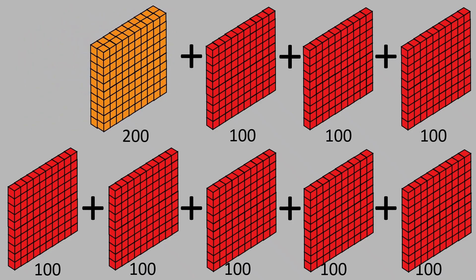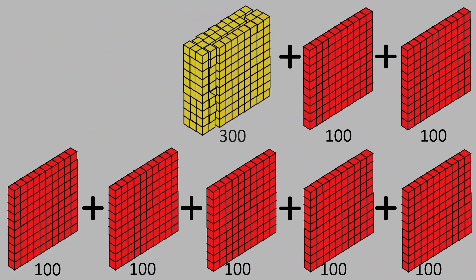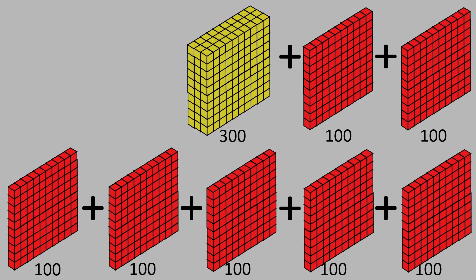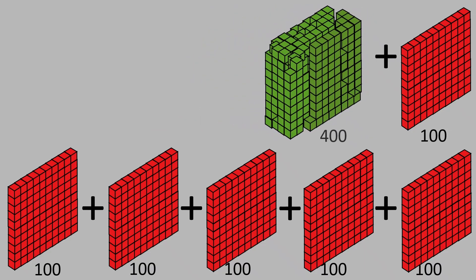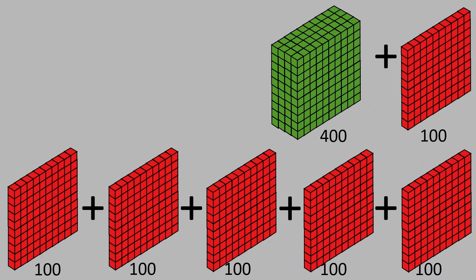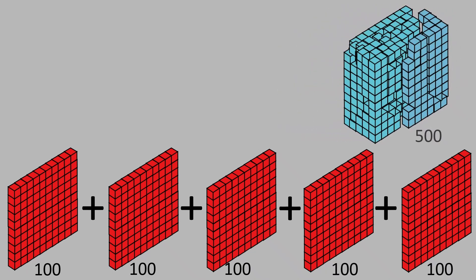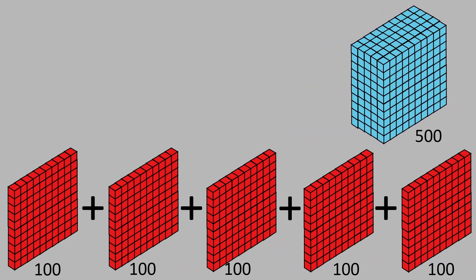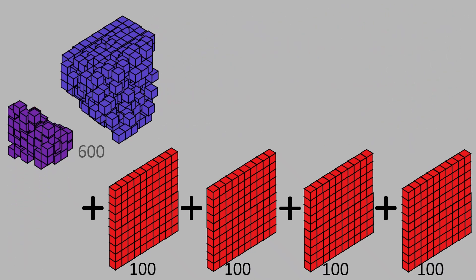200 plus 100 is equal to 300. 300 plus 100 is equal to 400. 400 plus 100 is equal to 500. 500 plus 100 is equal to 600.